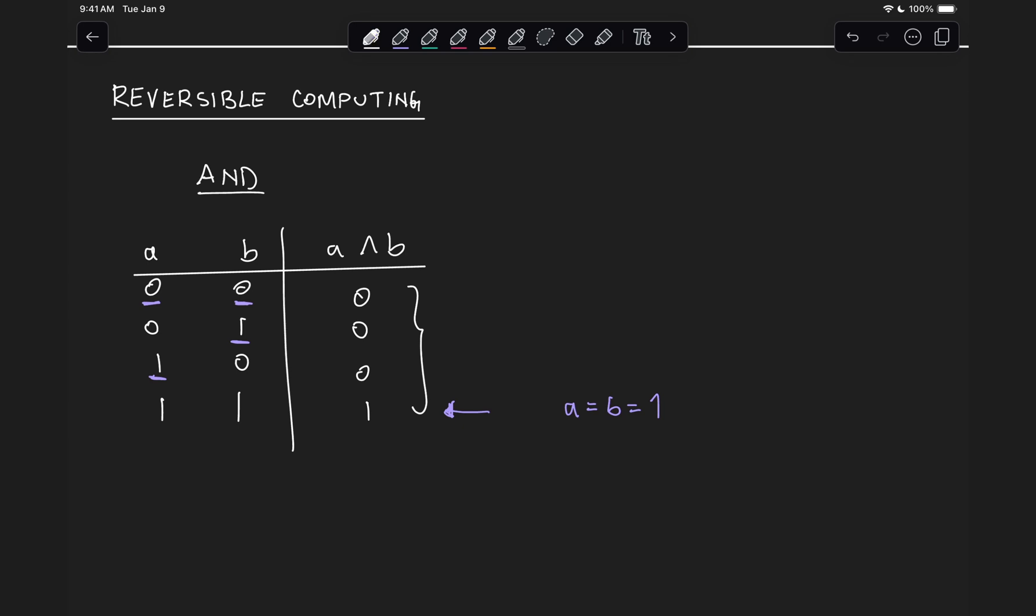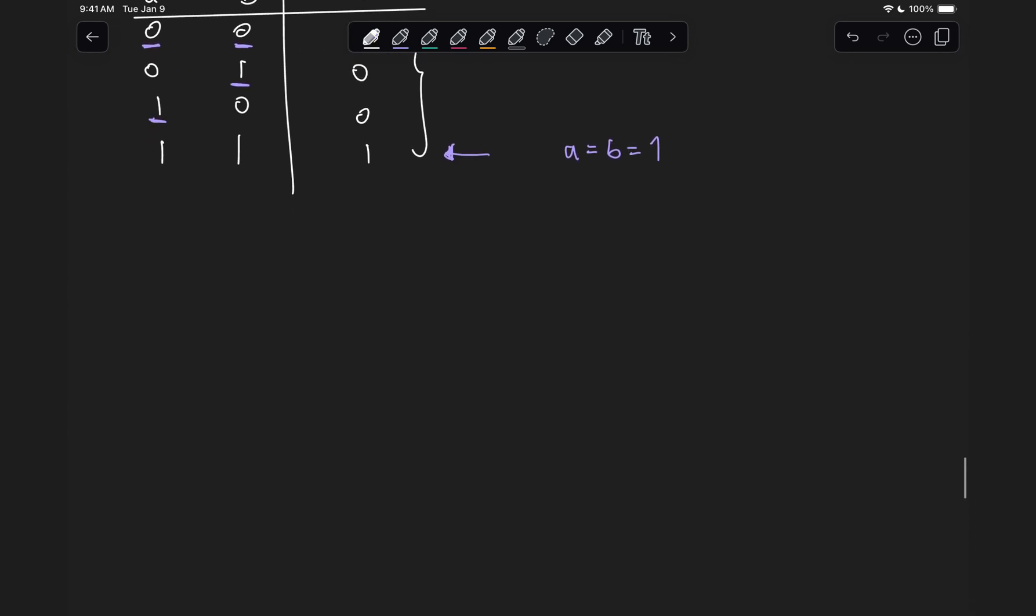Let's start with the NOT operation. We know that if we have A, we get A-bar. If we get zero at the input, we have one at the output, and one at the input, zero at the output. So the NOT gate, at a conceptual level, we know is reversible, because given A-bar, we can always figure out what A is.